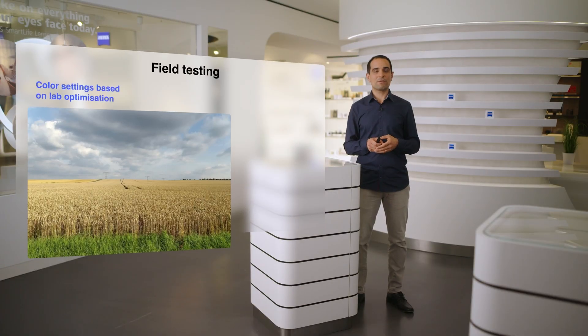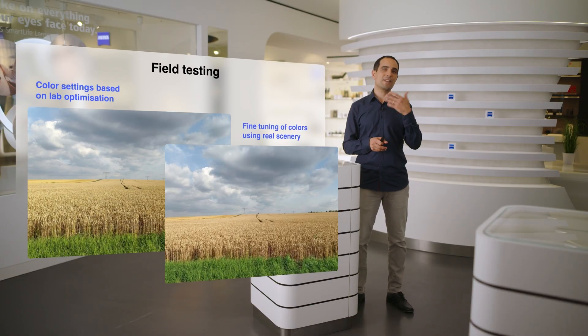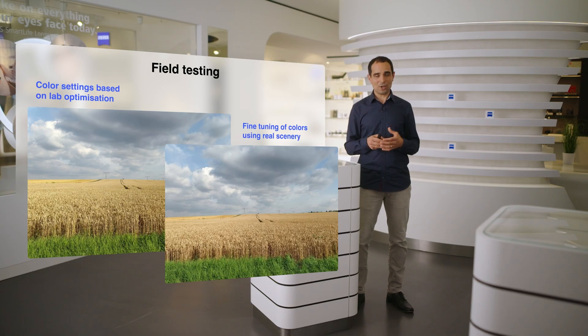After we finish the tuning in the lab, we still have to go outside to perform some fine tuning, because there are some situations that we cannot reproduce in the lab. For example, you see a wheat field with green grass in front of it and the blue sky. That's the kind of situation we look for outside in order to fine tune the colors and match the natural colors as best as possible, by being on the scene to see what the actual color really was.